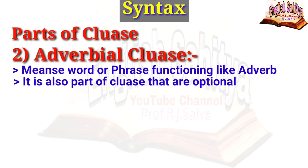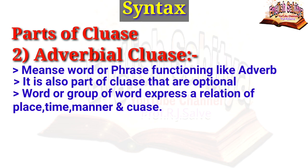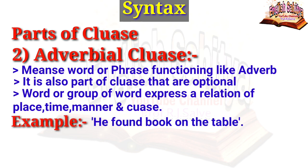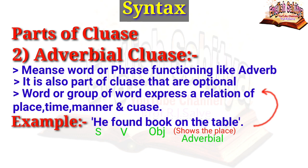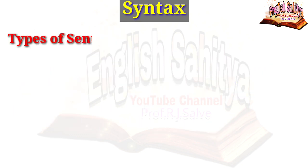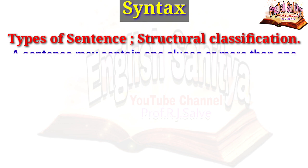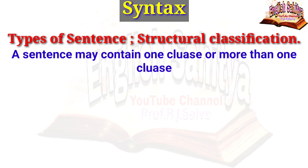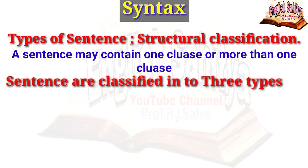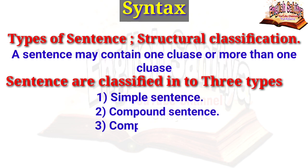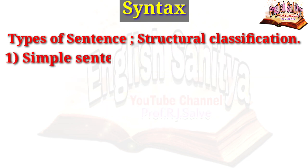The adverbial clause means a word or phrase functioning like an adverb. It is an optional part of a clause — a word or group of words expressing relations of place, time, manner, and cause. For example, 'he found books on the table' — 'he' is the subject, 'found' is the verb, 'books' is the object, and 'on the table' shows place, which is the adverbial. A sentence may contain one clause or more than one clause. Sentences are classified into three types: simple sentence, compound sentence, and complex sentence.